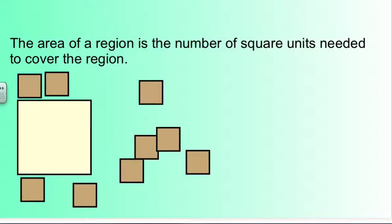The area of a region is the number of squares needed to cover the region. So if you look at the ivory square and the little tan squares all around it, how many of the tan squares do you think it would take to cover the ivory square?